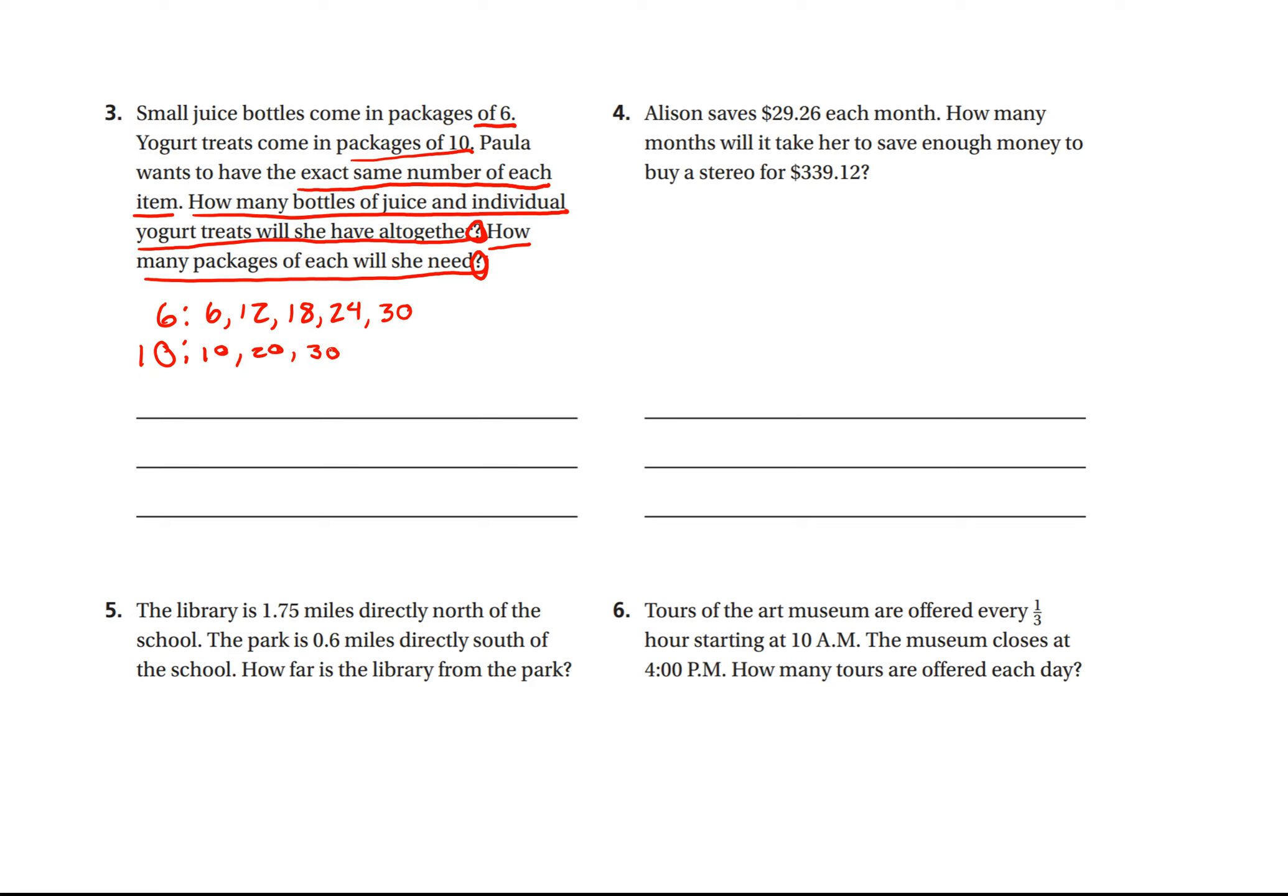So Paula wants to have the exact same number of each item. How many bottles of juice and individual yogurt treats will she have all together? Well, she'll have 30, and these are the juices. And she'll have 30 of the yogurts. So that's a total.